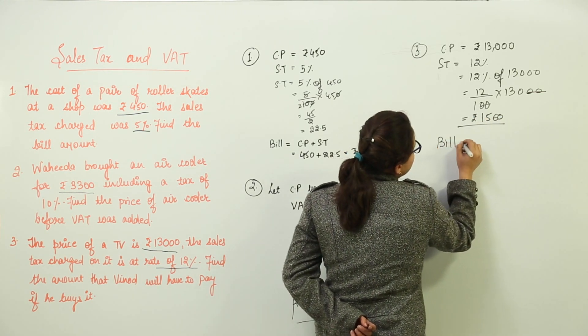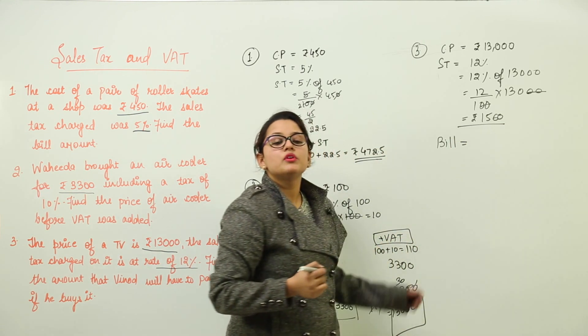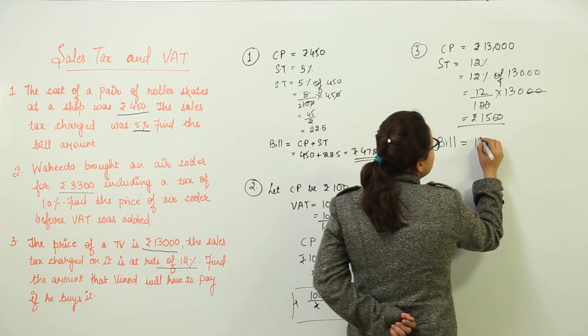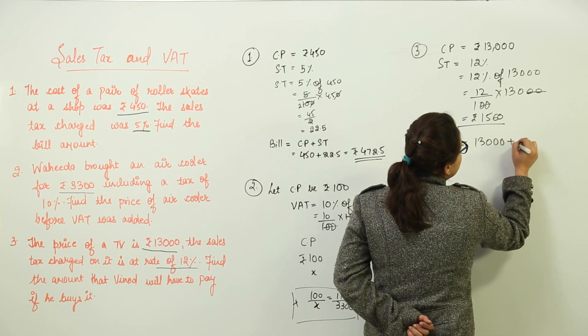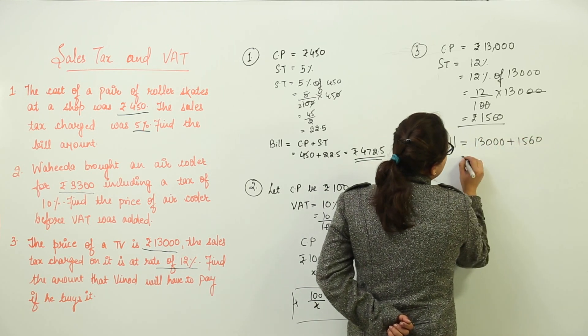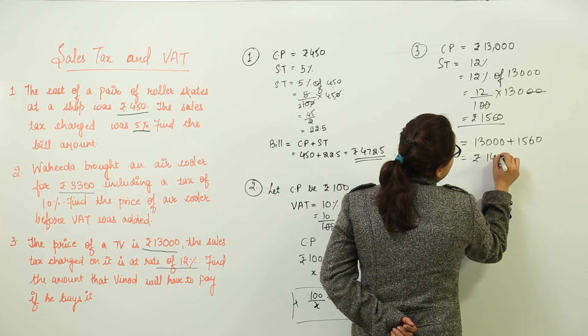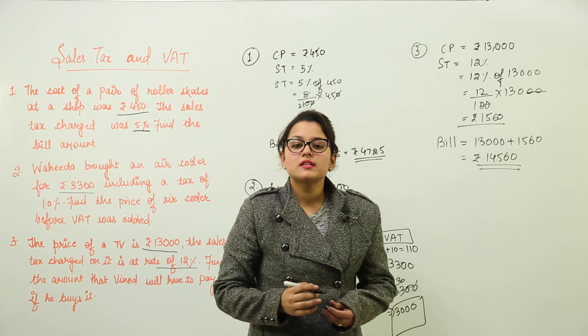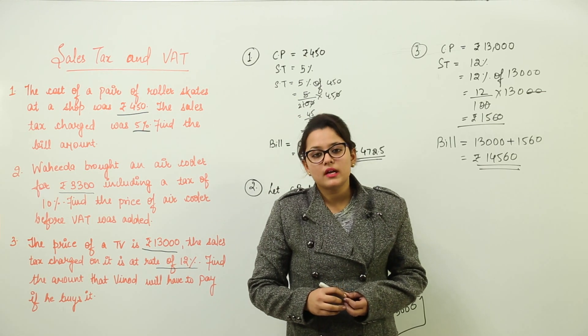Now the total billing amount that he has to pay, the bill that Vinod will have to pay if he buys this TV would be 13,000 plus 1,560, equal to ₹14,560. So this is how sales tax and value added taxes are calculated.